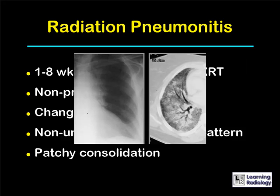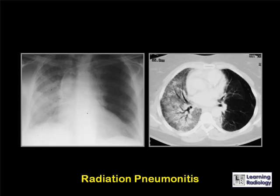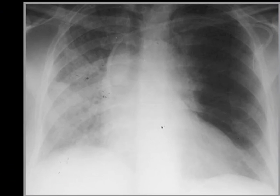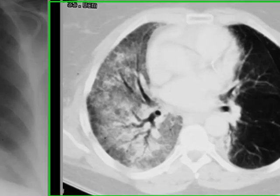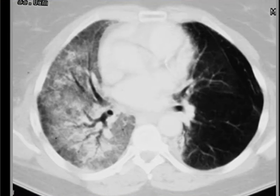This is an example of radiation pneumonitis in the right lung in an individual being treated for breast carcinoma with external radiation. On the conventional radiograph, there is airspace disease in the right lower lobe. On CT, there is a dense ground glass pattern with air bronchograms seen in the right lung.